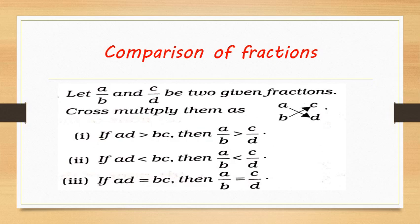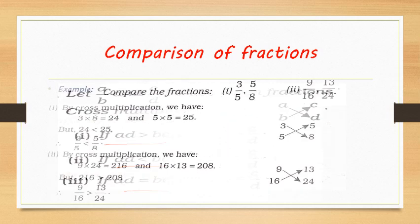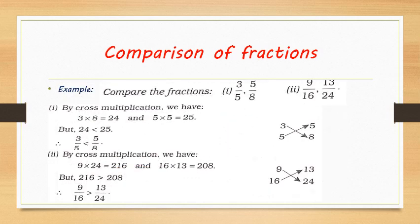Keeping the numerators in place, multiply each numerator by the opposite denominator. If AD is greater than BC, then a by b is greater than c by d. If AD is smaller than BC, then a by b is smaller than c by d. If AD is equal to BC, then a by b is equal to c by d.